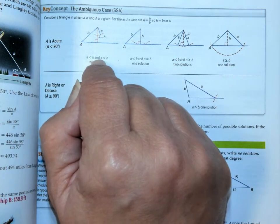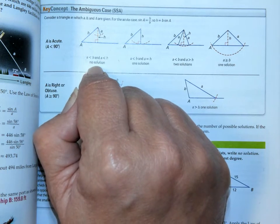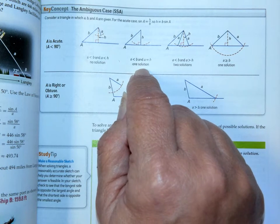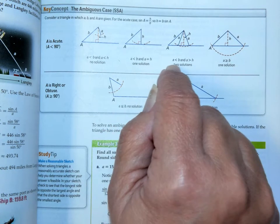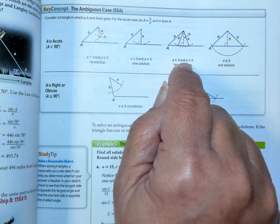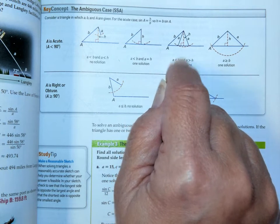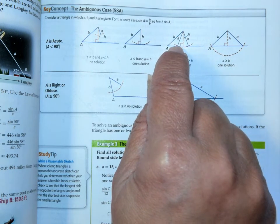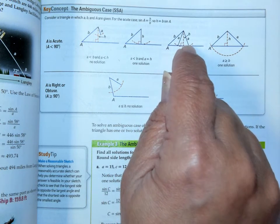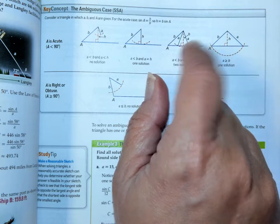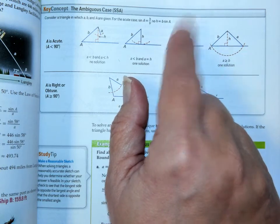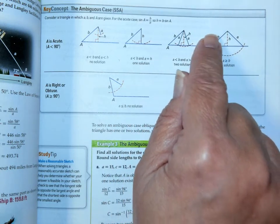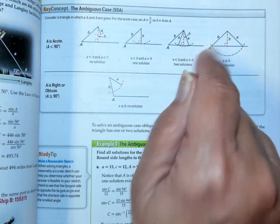Now, if A is less than B and A is also less than H, we're going to have no solution. If A is less than B and A is equal to H, we're going to have one solution, a right triangle. But if A is less than B and A is greater than H, we're going to have two solutions. One slanting this way and forming an obtuse angle, and the other one that slants this way and forming an acute angle. So this is the one that's the real issue. And then if A is greater than or equal to B, we have one solution, and our triangle is like that.